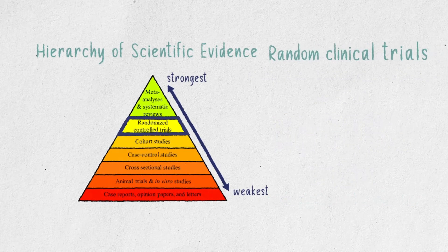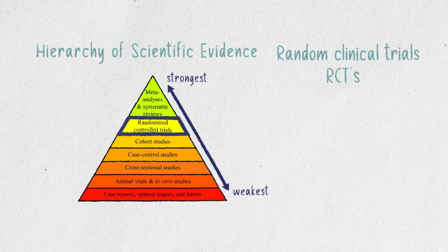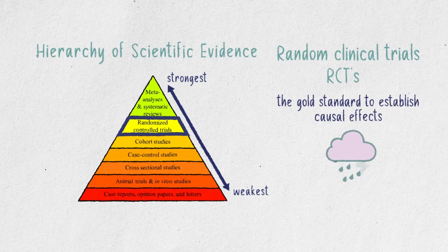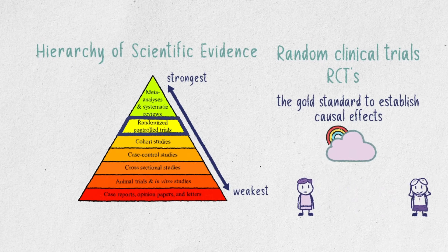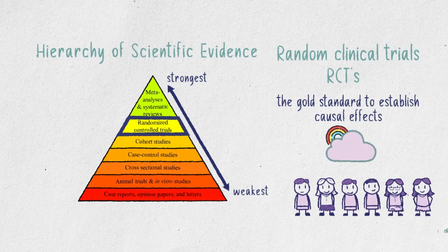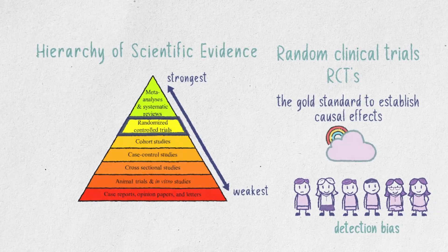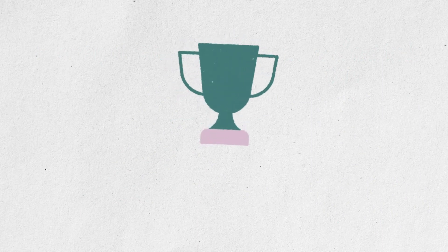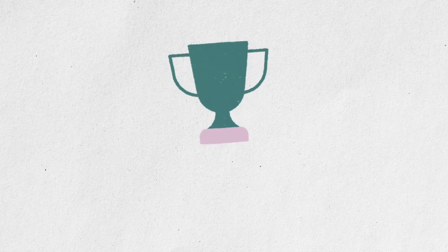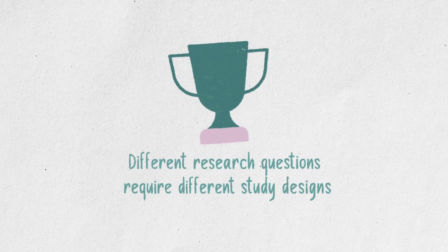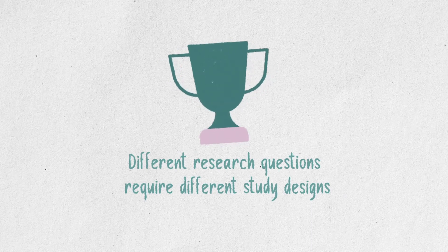Cohort studies are also subjected to misclassification and selection bias, which can be reduced in randomized clinical trials, or RCTs, by blinding. RCTs are considered the gold standard to establish a causal effect, but they have low generalizability and can be subjected to detection bias. With that said, you might wonder: what is the best study design? That actually depends totally on the type of question you want answered.